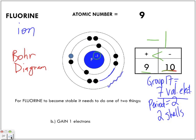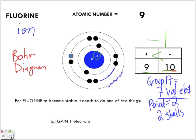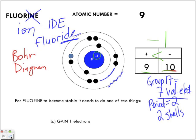Here's the trick with non-metals: with non-metals, there is a name change. The -INE gets dropped for -IDE. So we don't refer to it as a fluorine ion — we refer to it as fluoride. If you were asked to draw a fluoride ion, we're referring to the ion version of fluorine. Non-metals will drop their ending to -IDE.